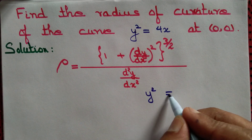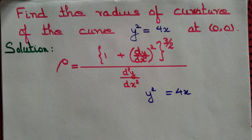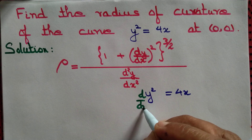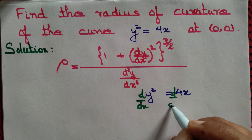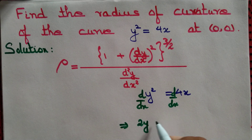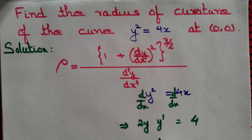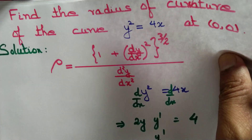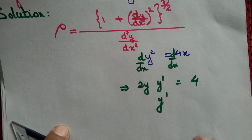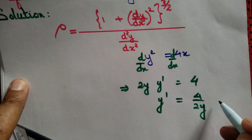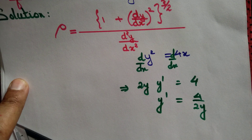We are given y² = 4x. Differentiating both sides with respect to x, by the chain rule we get 2y·y' = 4, so y' = 4/(2y). This is undefined at (0, 0), that is, undefined at the origin.